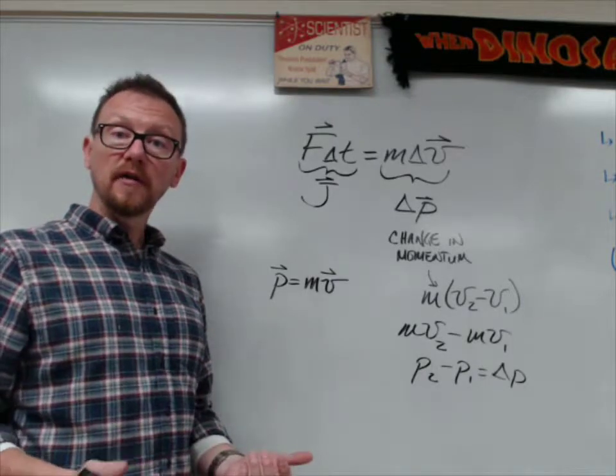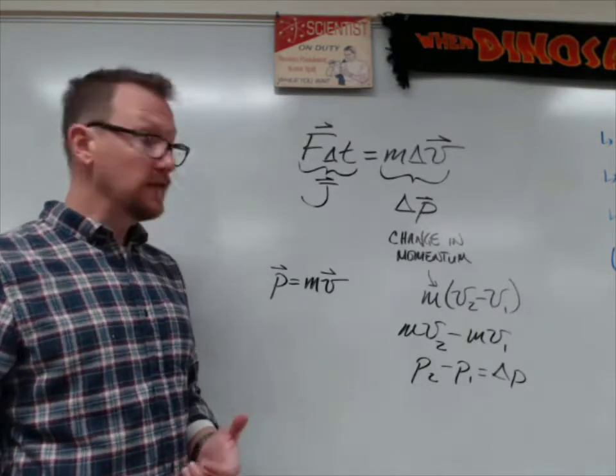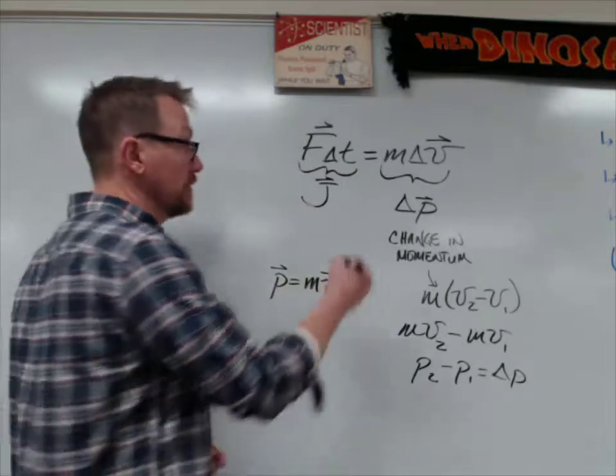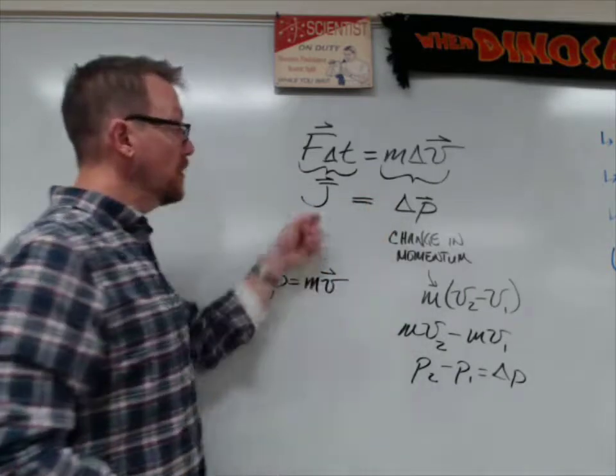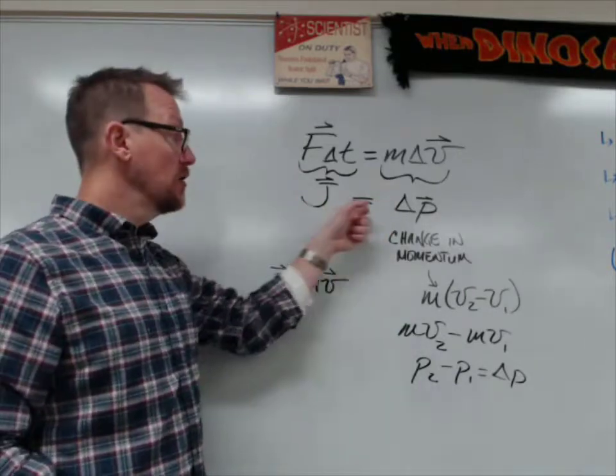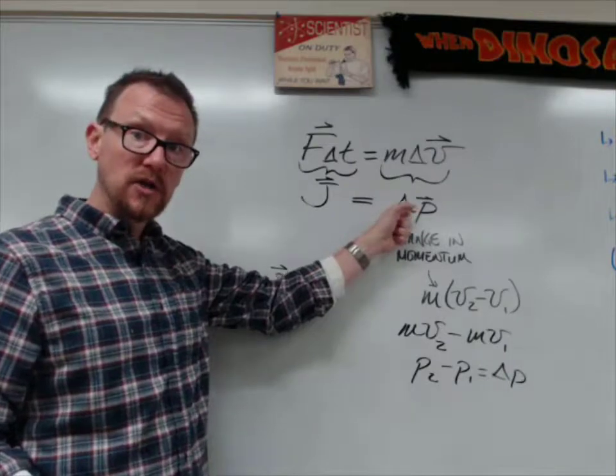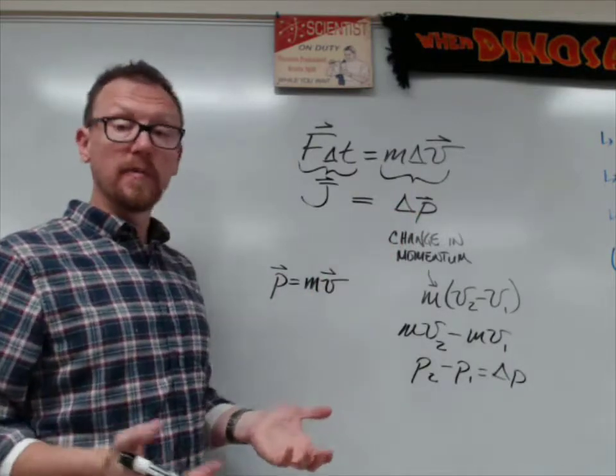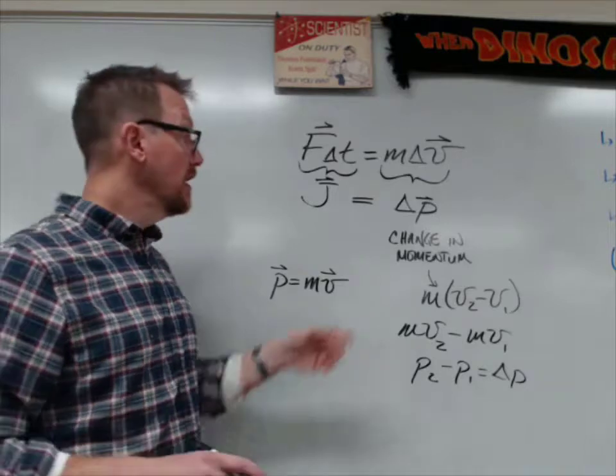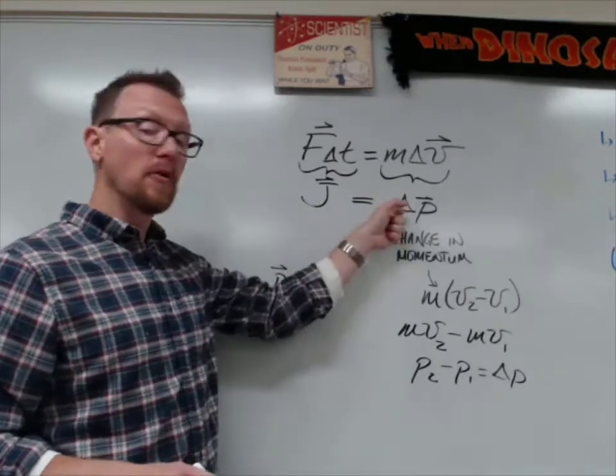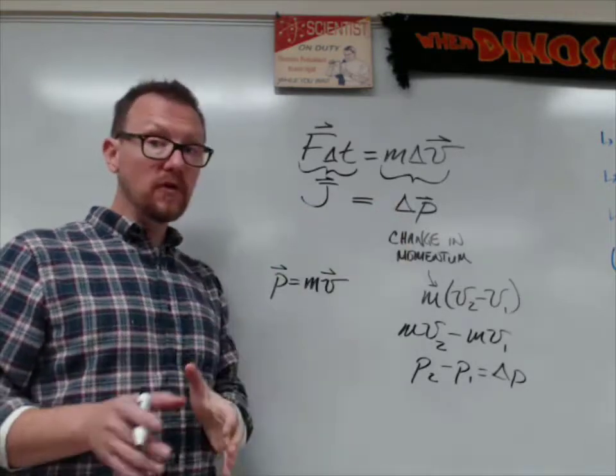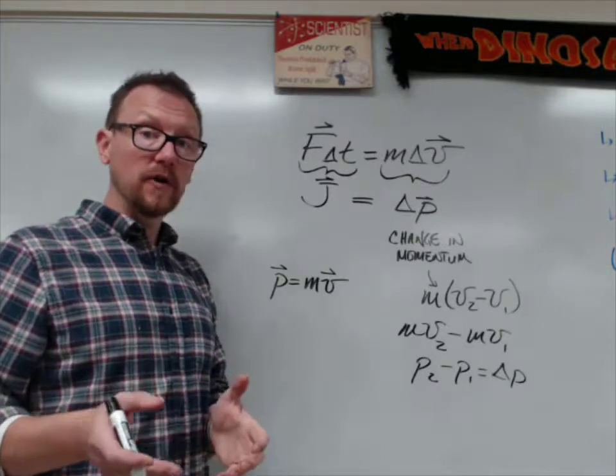So the delta P, this change in momentum, is equivalent to the impulse. And so if you know how much impulse is applied to something, you know how much the momentum has changed. And this is a critical part, in fact I think the most critical part of this entire unit, is that an impulse changes momentum. If you can figure it out, then it works. Here's a quick example.